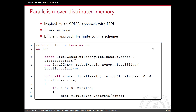The design of CHAMPS is inspired by a typical SPMD approach with MPI. We take the initial grid, divide it into multiple zones — typically equal to the number of cores — and create one task per zone. Every task performs the same computation on its respective elements. We chose this approach because it remains the most efficient method for finite volume schemes, as some computational loops cannot be well parallelized otherwise.